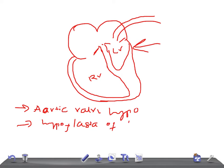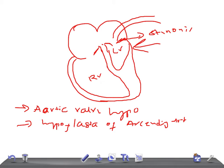There is hypoplasia of the ascending aorta. The left ventricle hypoplasia is there, and mitral valve stenosis or atresia can also be there. So there are so many problems. The patient suffering from this disease will have a single right ventricle, and that single right ventricle provides blood to the pulmonary system and systemic circulation via the PDA, and to the coronary system via retrograde flow after crossing the PDA.